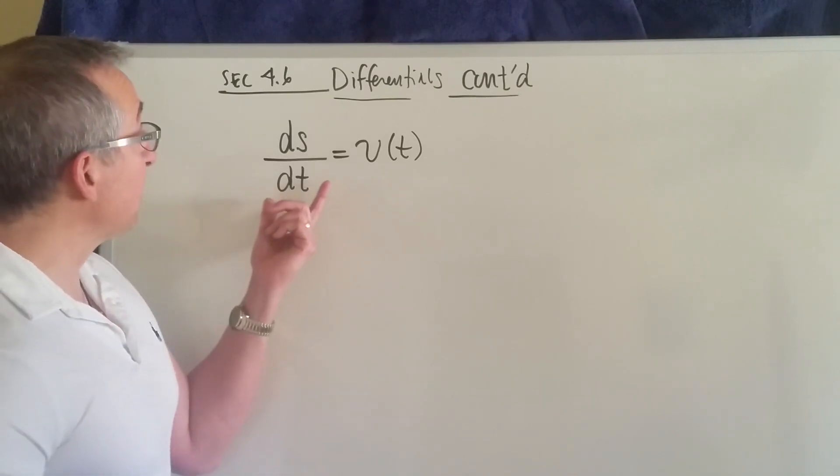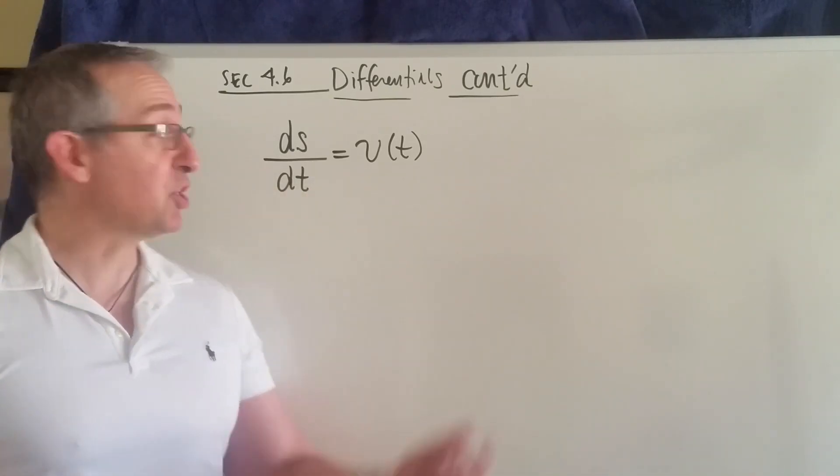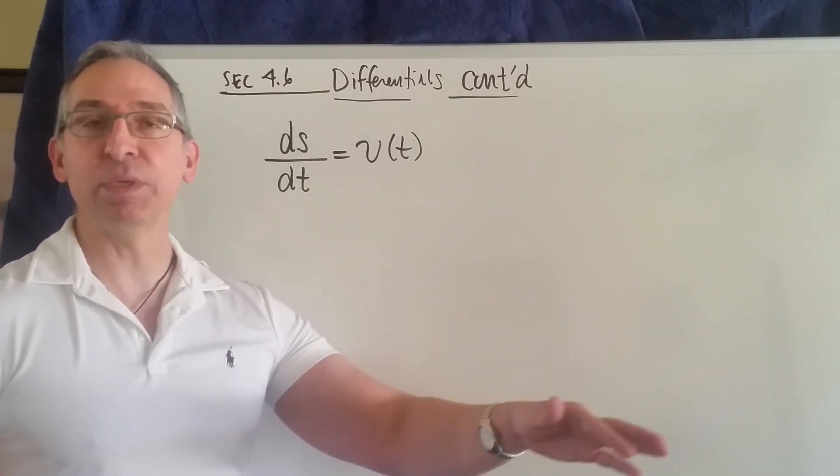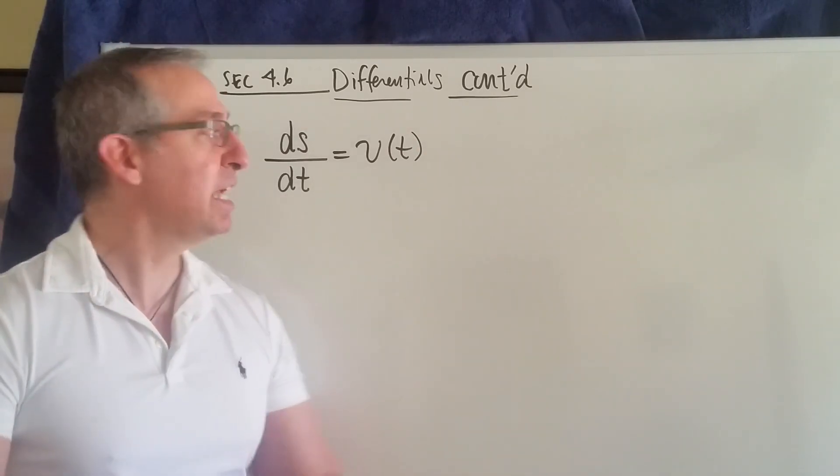So what you have over here is that's the derivative of the position function, and it's equal to velocity. But if you think about it, go all the way back to algebra where we did the time distance problems, remember this?